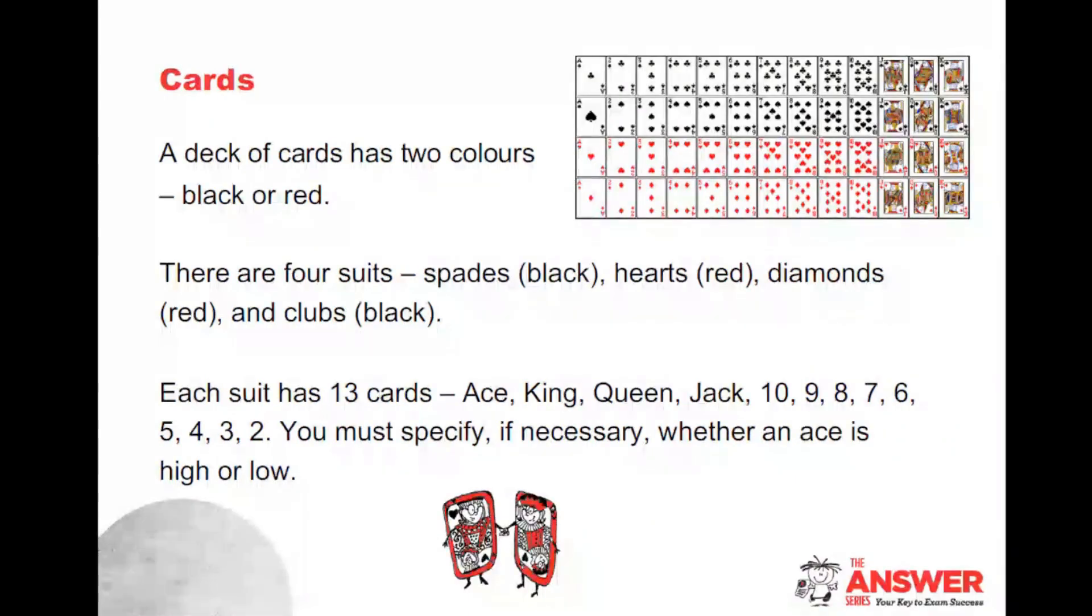Each suit has 13 cards. And you need to specify, if necessary, whether an ace is high or low. In any kinds of questions in a maths exam, you've got to think what are you actually testing? In this section, you're testing probability. So if in a question where I say something about cards that are less than five, you don't want a child thinking is ace less than five or bigger than five. In some games ace is high, other games aces are low.